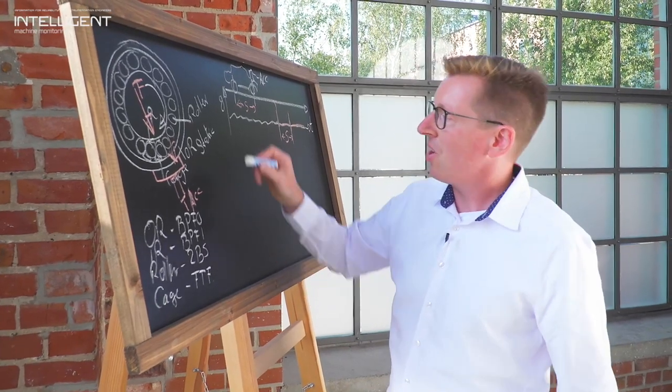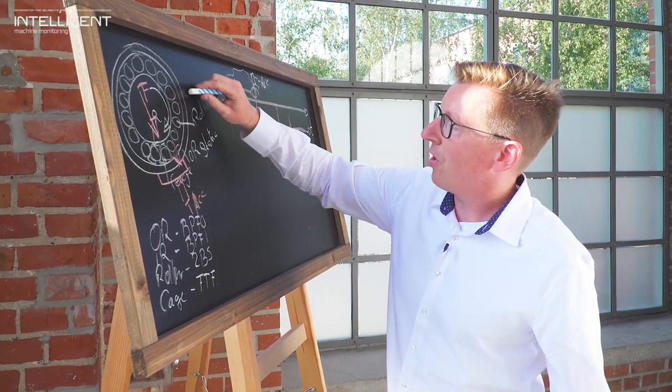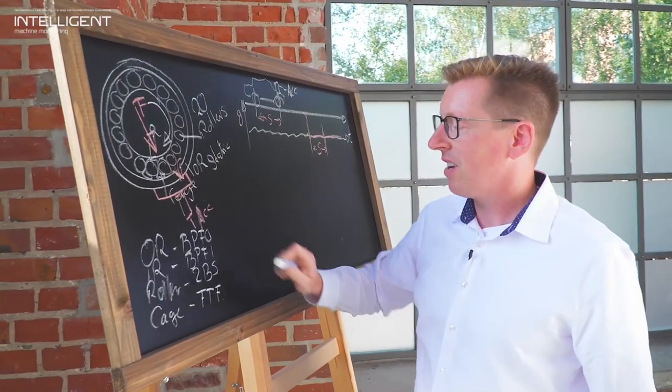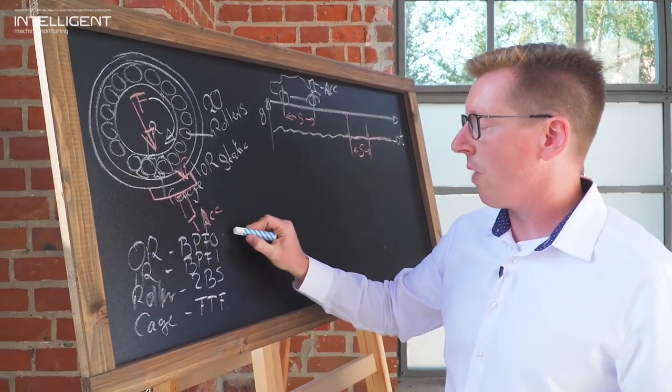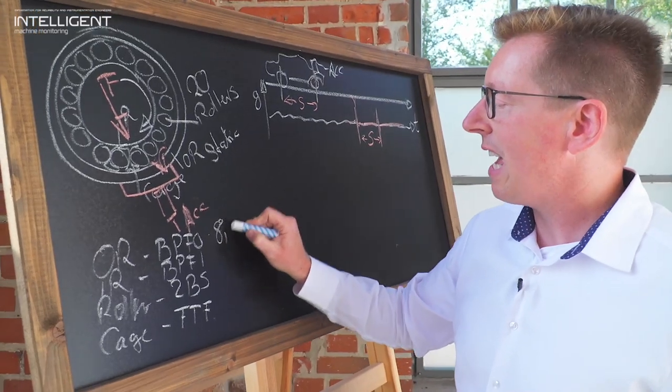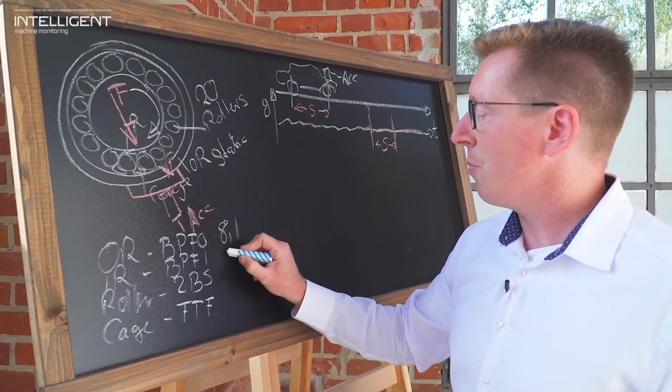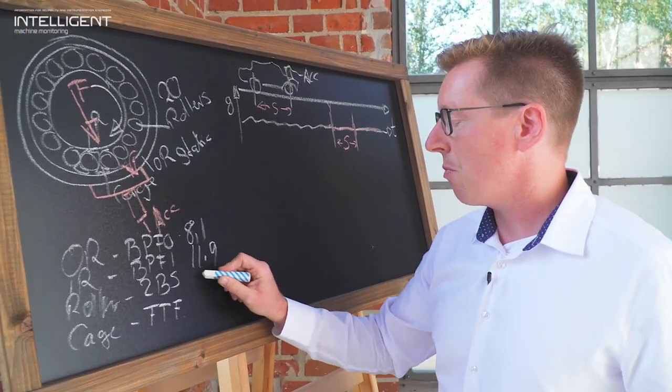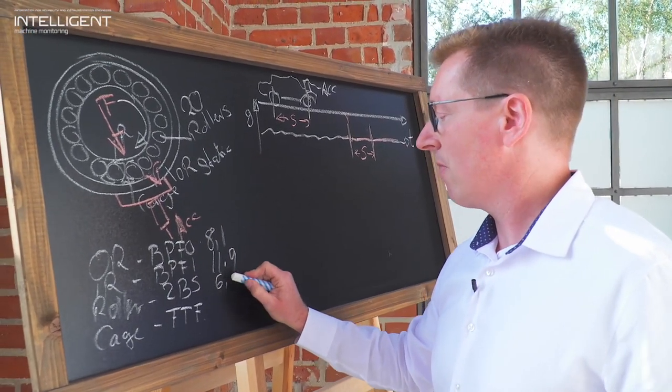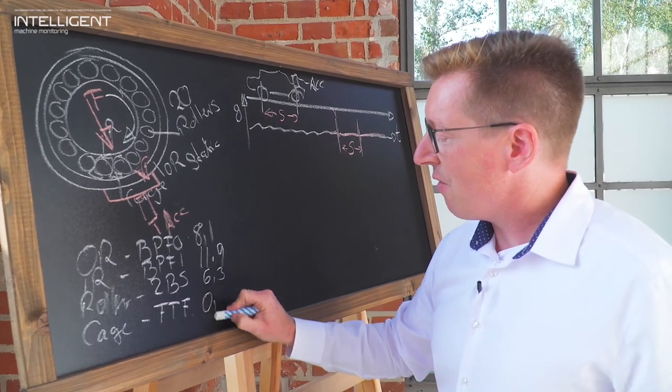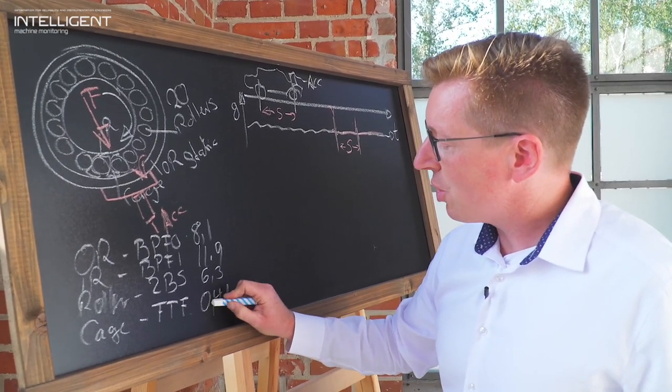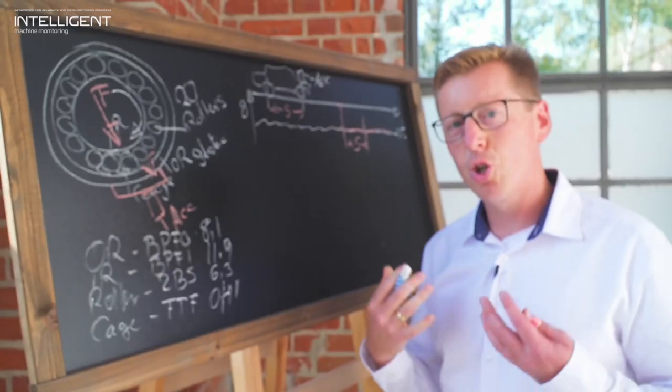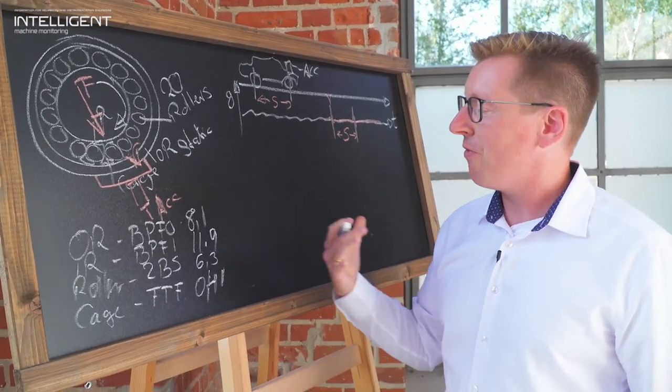As an example say we have an example here with 20 rollers in my rolling element bearing the BPFO could be in the range for example of 8.1 times, the BPFI for example is 11.9, 2 times BS may be in the range of 6.3 and the fundamental train frequency is typically in the range of 0.4, 0.41 those are typical values for fault frequencies.